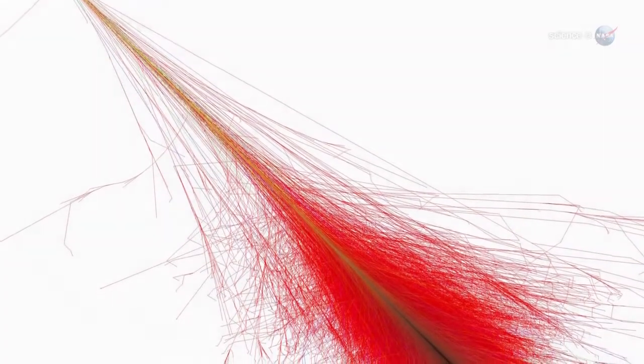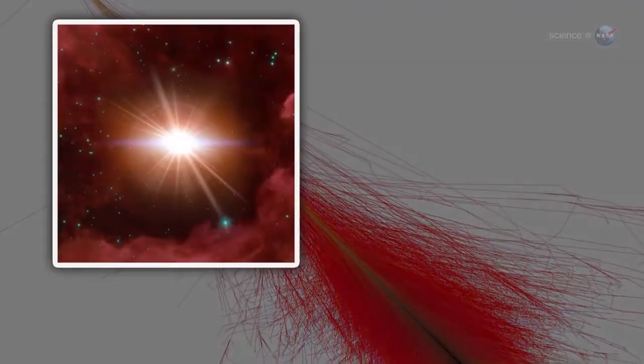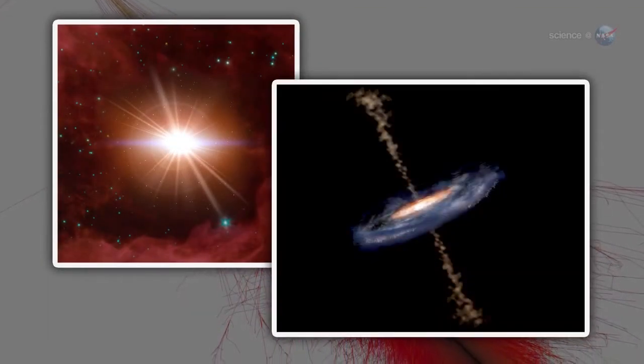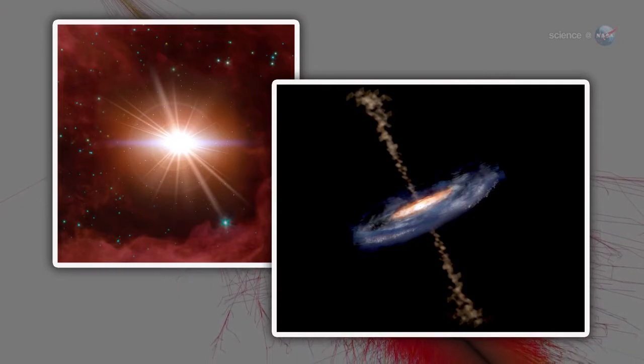Cosmic rays are subatomic particles such as protons and helium nuclei accelerated to near light speed by supernova explosions and other violent events in the cosmos. Researchers have long thought that cosmic rays contain a sprinkling of antimatter.